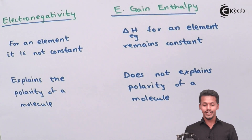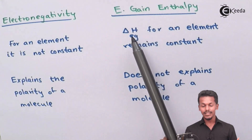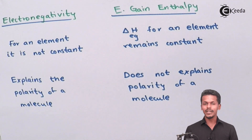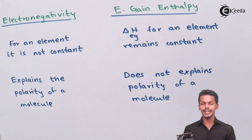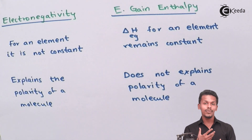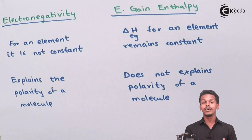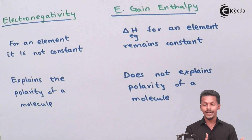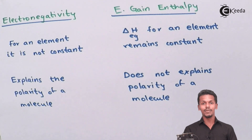Another difference: for an element, electronegativity is not constant, but electron gain enthalpy (ΔH_eg) for an element remains constant. For example, if we compare the electronegativity of fluorine in hydrogen fluoride (HF) versus in methyl fluoride, the electronegativity of the fluorine atom would be different in each compound. So electronegativity changes and depends on the atom to which it is bonded — it does not remain constant.